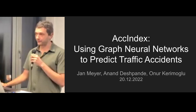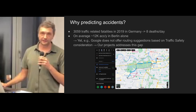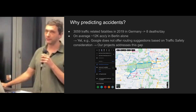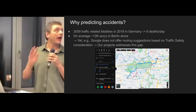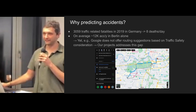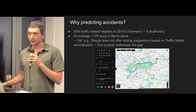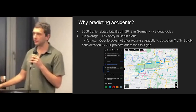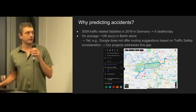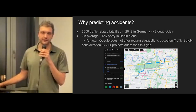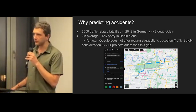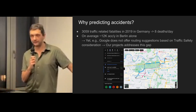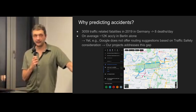The first question which arises is: why predict accidents at all? Looking at the statistics, there are about 3,000 fatal accidents in Germany — averaging about eight per day — and 12,000 accidents in Berlin alone every year. And yet Google does not offer any routing suggestions based on traffic security considerations, and to our knowledge no other tool does this effectively. Our project addresses this gap; we don't want to wait for accidents to happen.